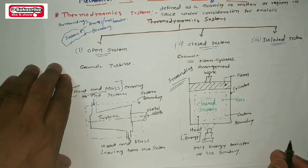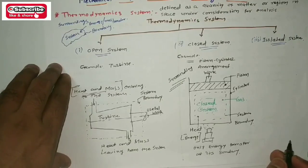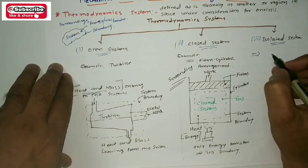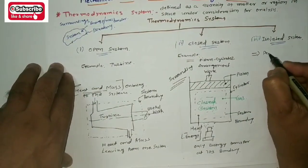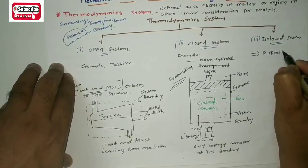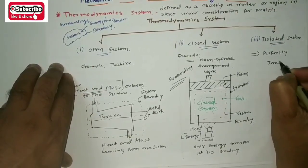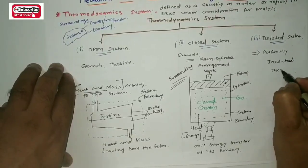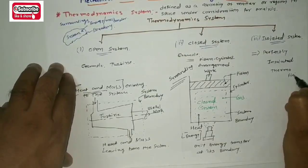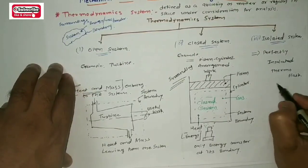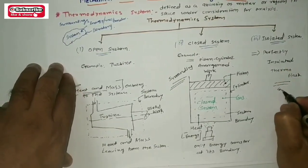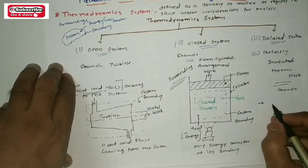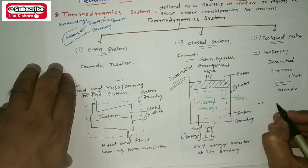The last one is the isolated system. The example of an isolated system is a thermos flask — a perfectly insulated thermos flask. In technical language, neither energy nor mass is transferred at its boundary.